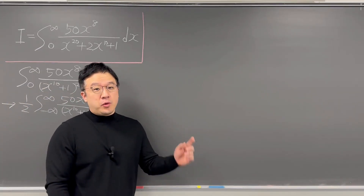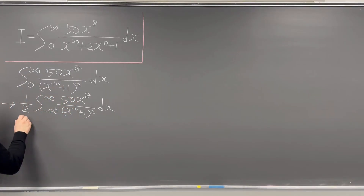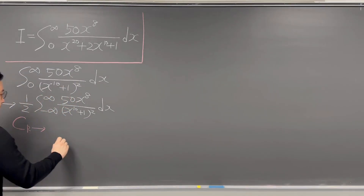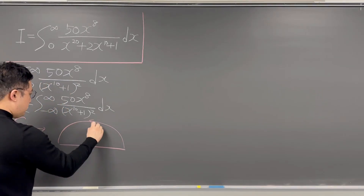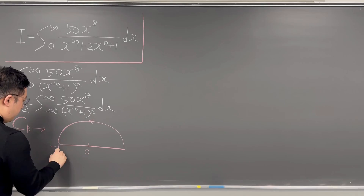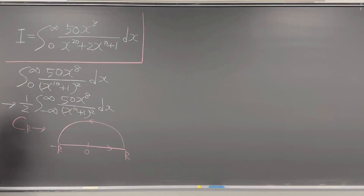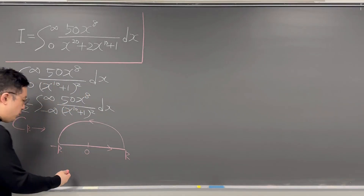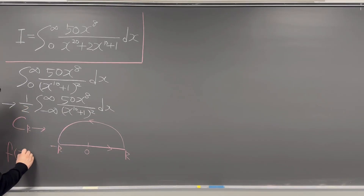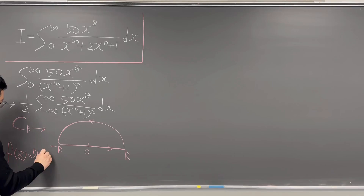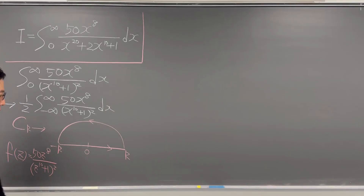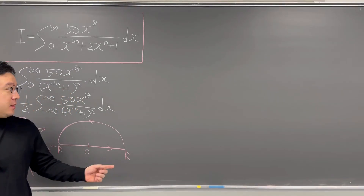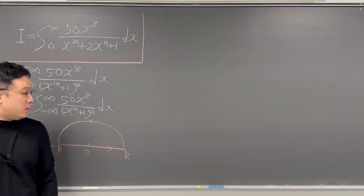So now we can work on the contour CR. Let me work on the contour. CR is the half circle with your radius of R. Then we can call F(z) as 50 times z to the power of 8 over z to the power of 10 plus 1, squared. In this case, if your R is going to infinity, then your integral over this contour, the half circle, will go to zero.